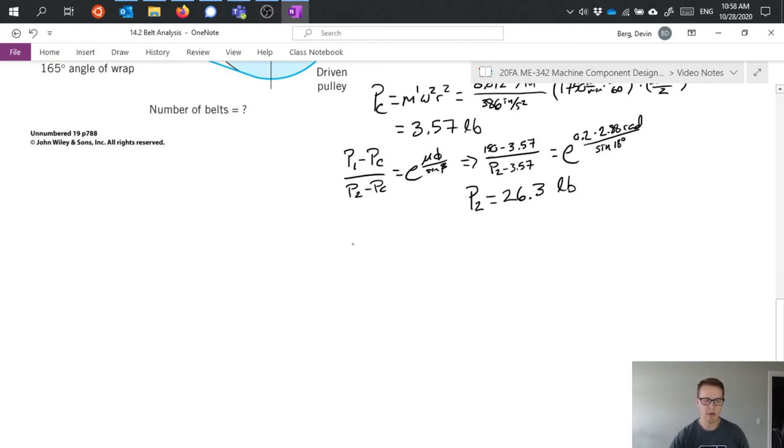This is useful because now I can take and plug that into my torque equation: P1 minus P2 times r. And I get 150 minus 26.3 times 3.7 over 2 and this comes out to be 229 inch pounds.